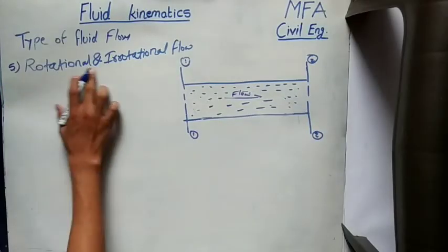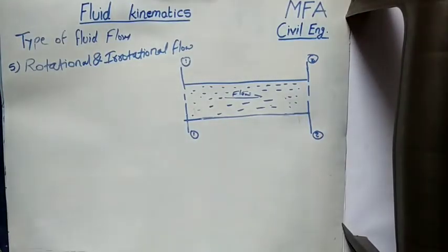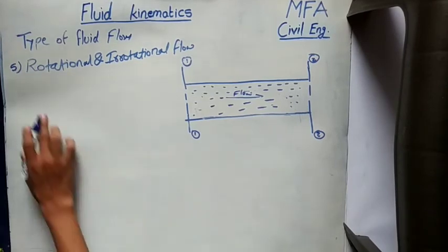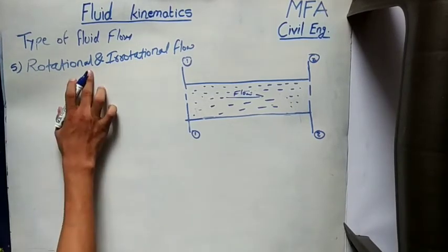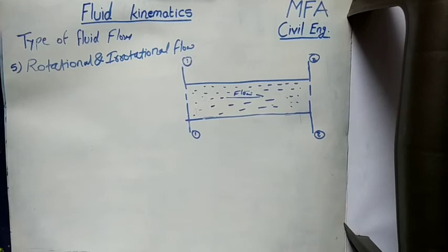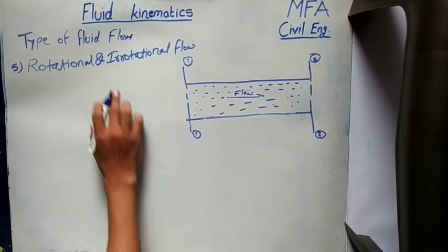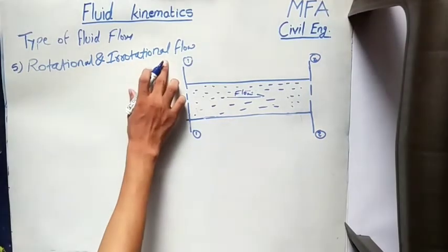Fifth is rotational and irrotational flow. When particles of the fluid travel along streamlines and also rotate about their own axis, that type of flow is called rotational flow. Similarly, when particles of the fluid flow along well-defined streamlines but do not rotate about their own axis, that type of flow is called irrotational flow.